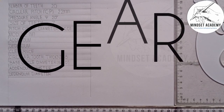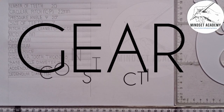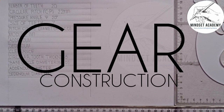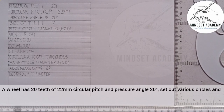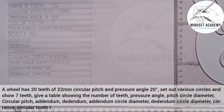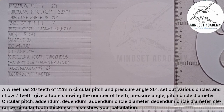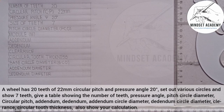Welcome to Mindset Academy where we want to solve a problem involving gears. The question says: a wheel has 20 teeth, 22 millimeter circular pitch, and pressure angle 20 degrees. Set out various circles and show 7 teeth. Give a table showing the number of teeth, pressure angle, pitch circle diameter, circular pitch, addendum, dedendum, addendum circle diameter, dedendum circle diameter, clearance, and circular tooth thickness.